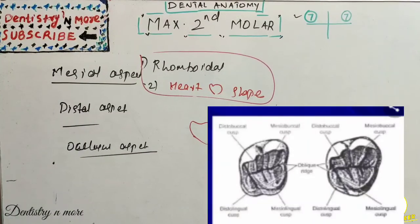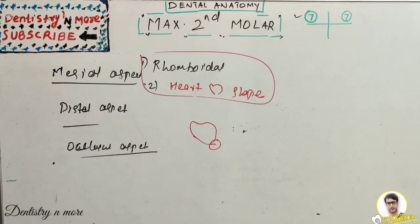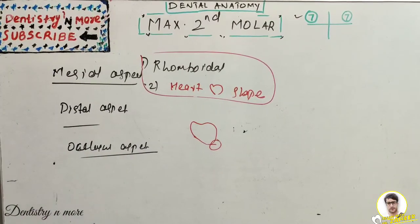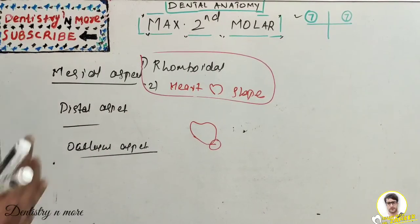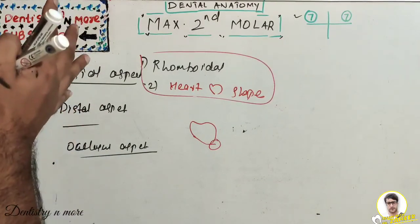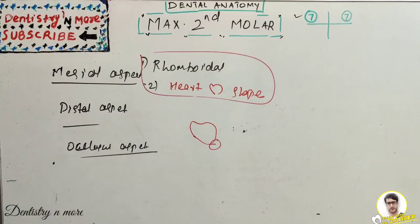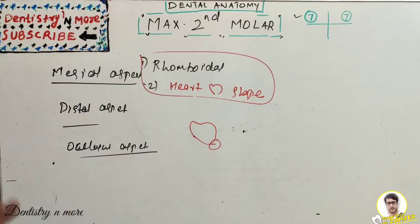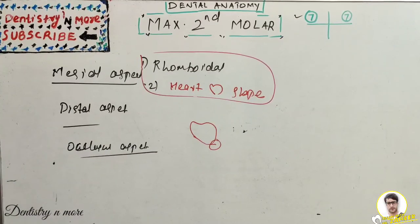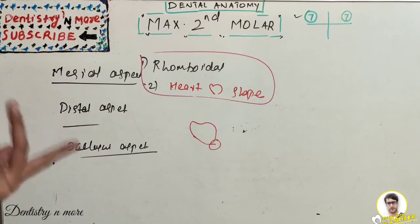That covers all aspects of the maxillary second molar. The next video will cover the maxillary third molar, which will be shorter since most features are less prominent. Remember: in dental anatomy exams, pictures carry half the marks — for a 10-mark question, the picture is worth 5 marks. Without a picture, you won't score more than five marks, as the examiner notices your diagram first. Always include a picture with your answers.